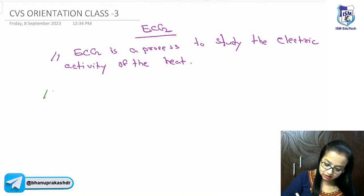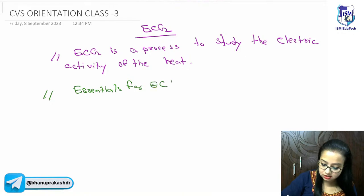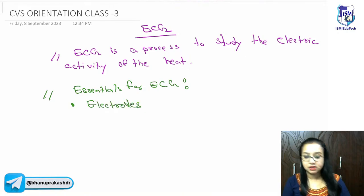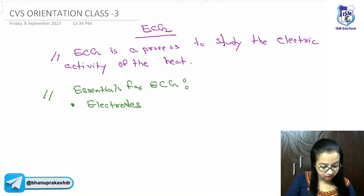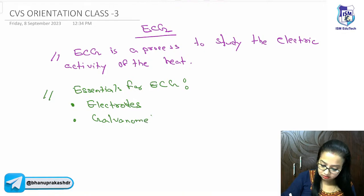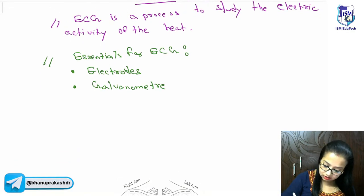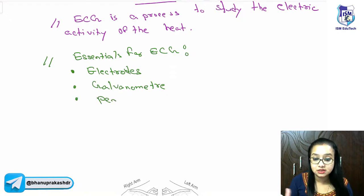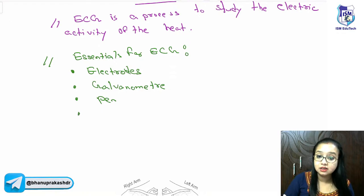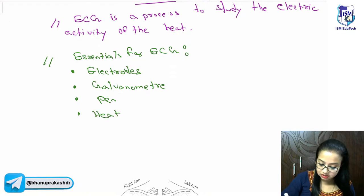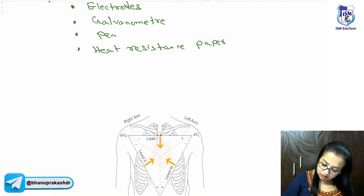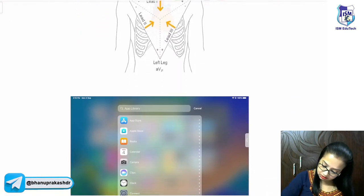Now, what are the essentials for ECG? Obviously, we need electrodes — positive and negative — which have to be connected to a galvanometer. We need a galvanometer, a pen that is sensitive to heat, and a heat resistant paper.